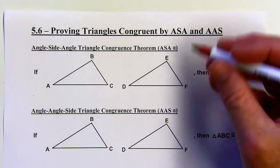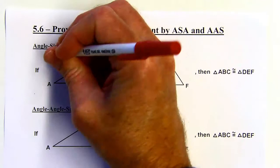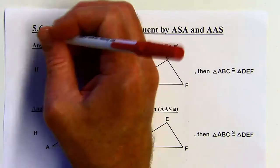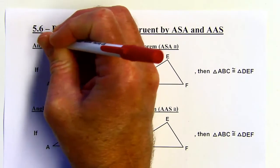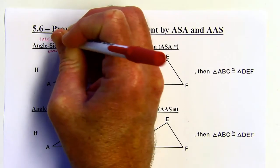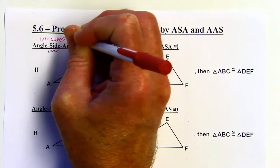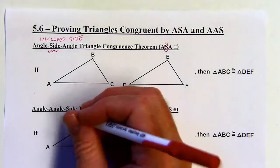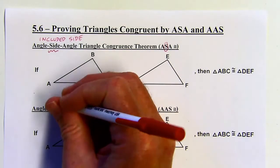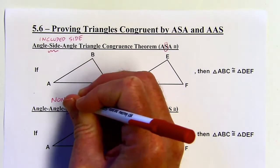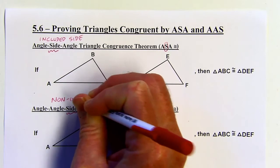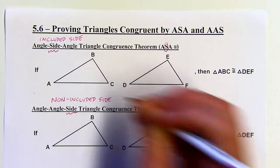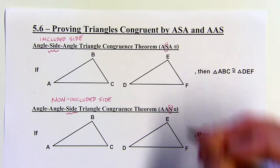The big difference is the side is in between the two angles, which means we're going to have an included side. That's why the S is between the two A's in ASA. And in AAS, this is a non-included side — that S is not between the two A's.